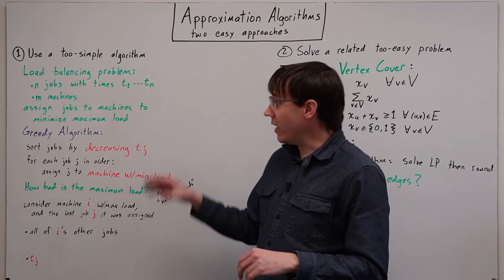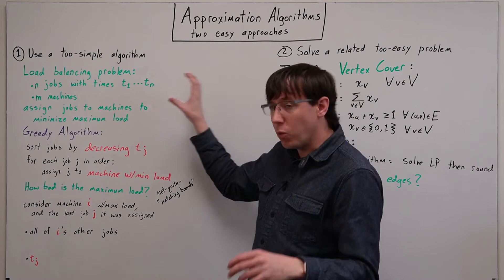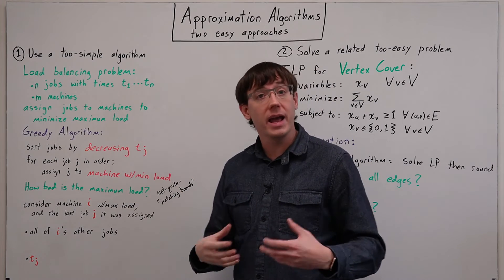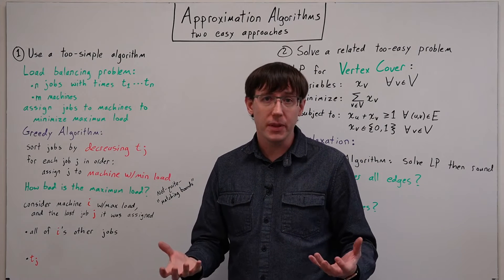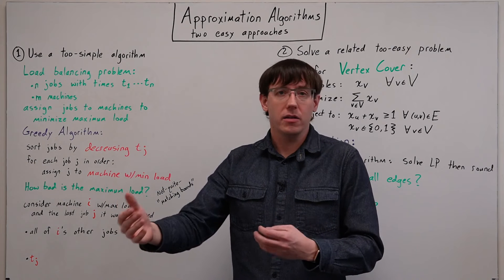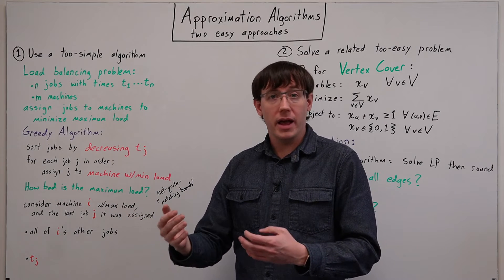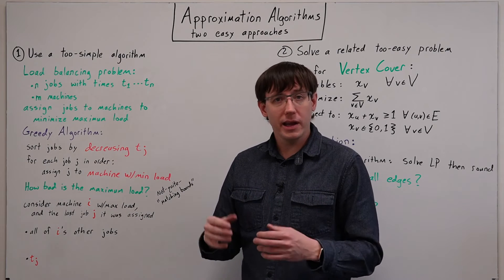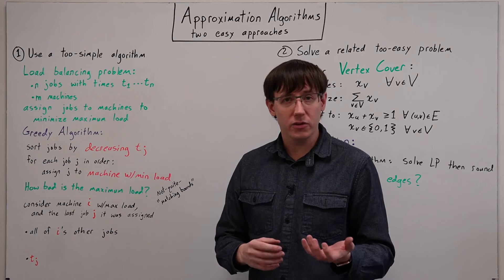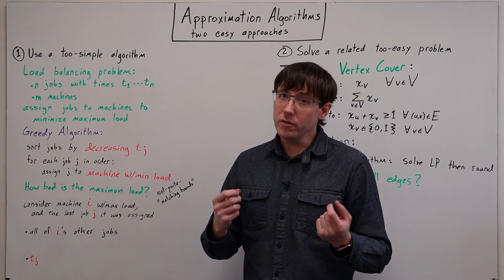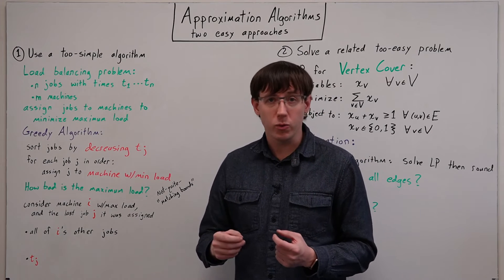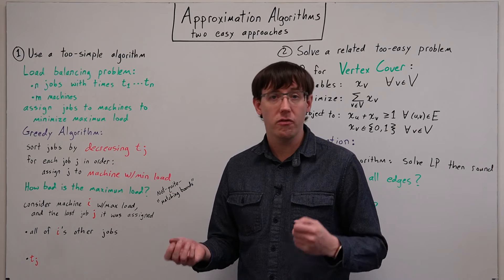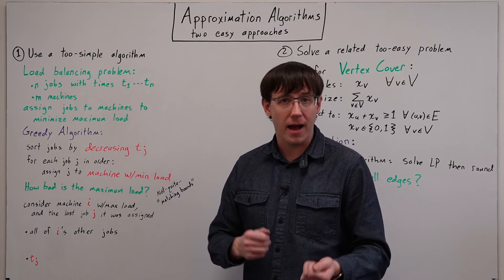So we can think about how bad is the worst-case load this algorithm assigns to any machine, and how much worse is that than an optimal solution. And our approach here harkens back to one of the proof techniques we talked about for greedy algorithms: matching bounds.